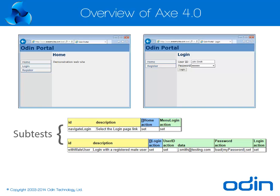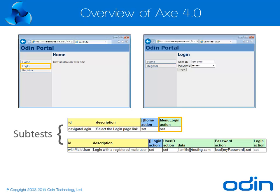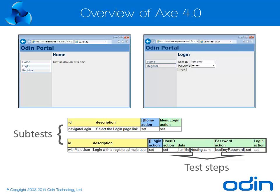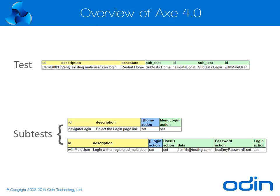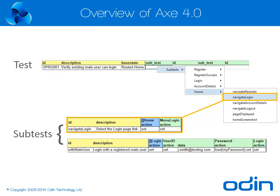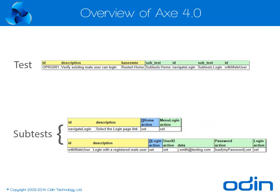which are composed of a sequence of test steps relating to the interaction with objects on that page, and are easily created using AXe's object explorer and spreadsheet designer. Then, testers can put together their test scenarios by referencing the subtests which they have created.